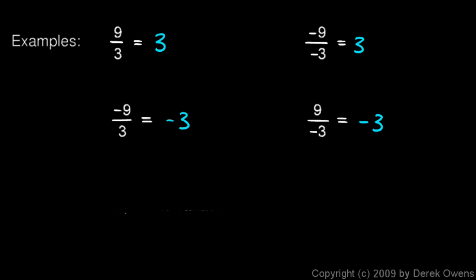You can think of this as a negative sign in the numerator and denominator canceling each other out. So, this negative sign here and that negative sign there cancel each other out. And, it's the same as just a positive 9 divided by a positive 3. And, this concept applies to variables as well as to numbers.